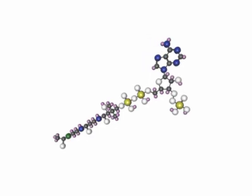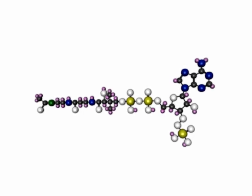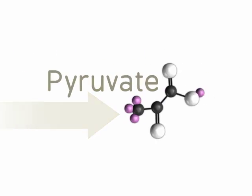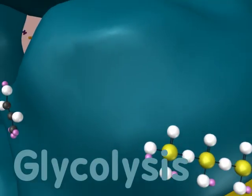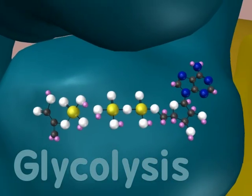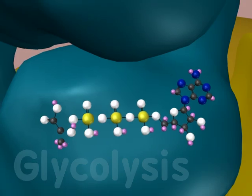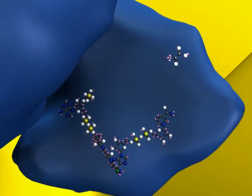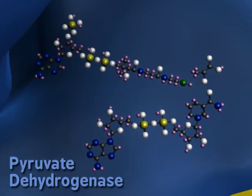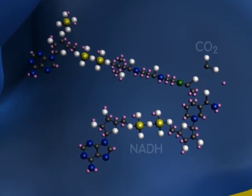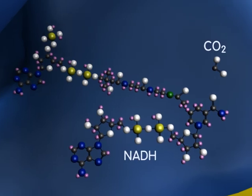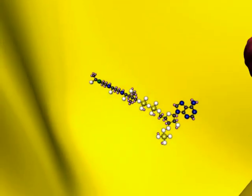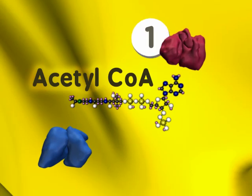The two-carbon molecule that begins the citric acid cycle is acetyl-CoA, made from pyruvate. Pyruvate is a product of glycolysis, the other major ATP-producing cycle in the cell. Pyruvate is transported into the mitochondrial matrix where it is oxidized to acetyl-CoA by pyruvate dehydrogenase. This step produces one NADH and one carbon dioxide for each of the two pyruvate molecules made from glucose. The acetyl-CoAs are the starting point for the citric acid cycle.